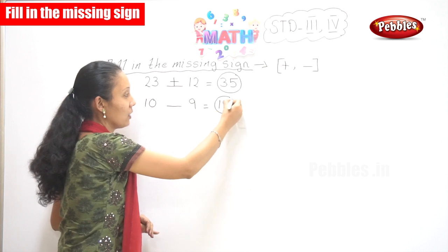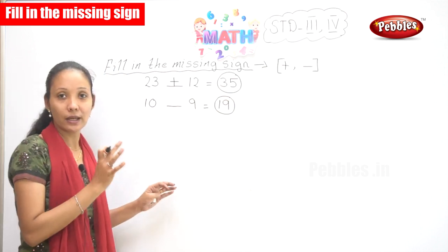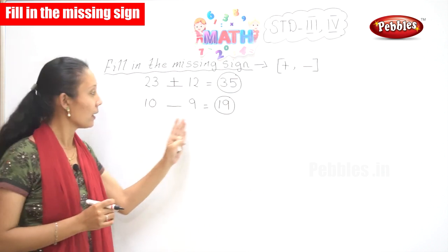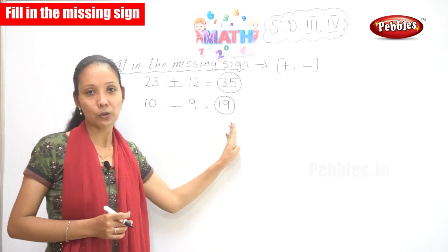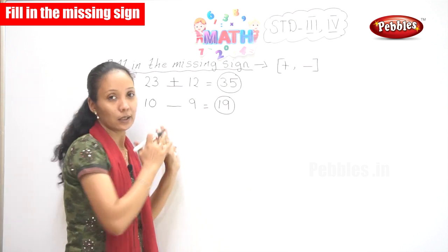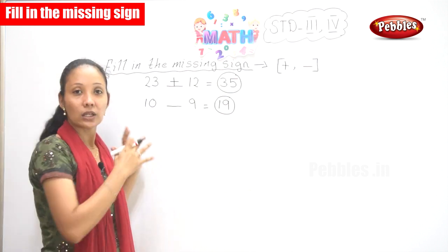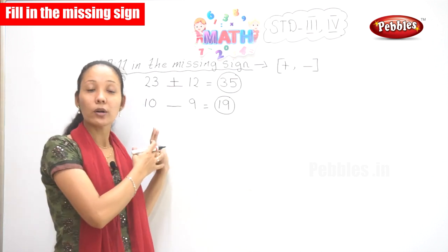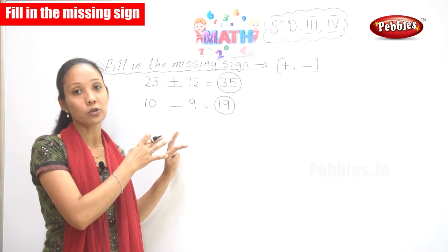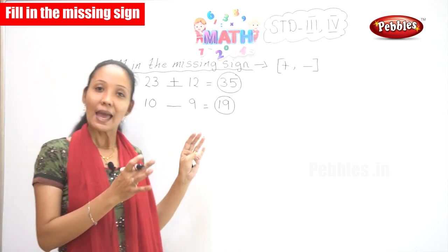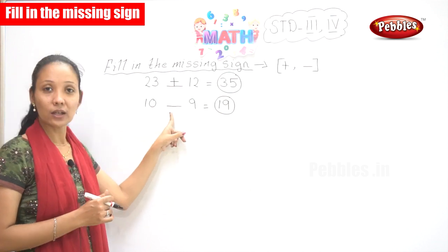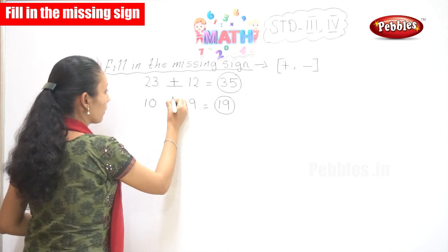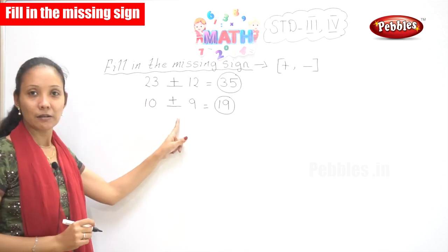To get the answer 19, what did you do with the 10 and 9? You have been adding the numbers. Did you add or did you subtract? Yes, you have been adding the number. So what is the sign over here? Yes, it's the plus sign. Good.